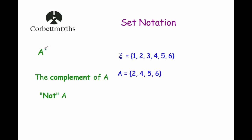Our next symbol is A with a little dash — A dash — and it's the complement of A, meaning anything that's not in A. So if we've got the universal set {1, 2, 3, 4, 5, 6} and A is the numbers {2, 4, 5, 6}, then the complement of A — the numbers in the universal set that are not in A — would be 1 and 3. So A dash stands for the complement of A or 'not A'. If I see A dash in a question I just tend to say 'not A'.